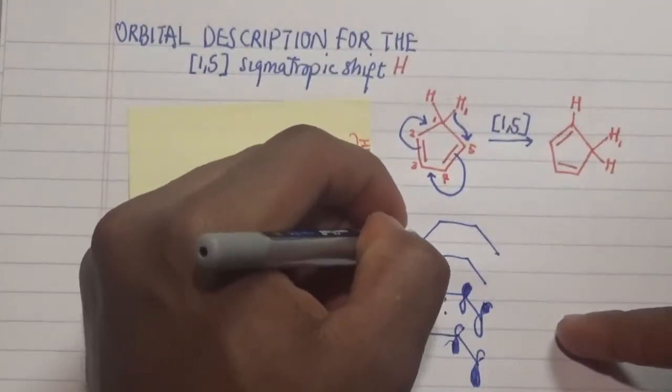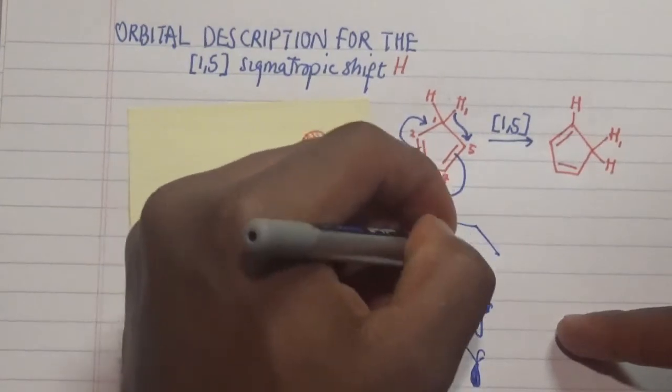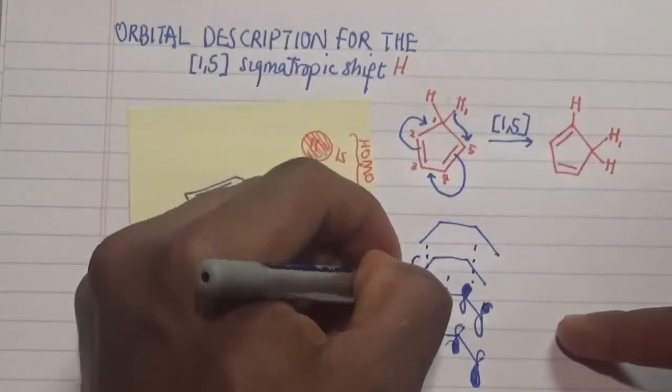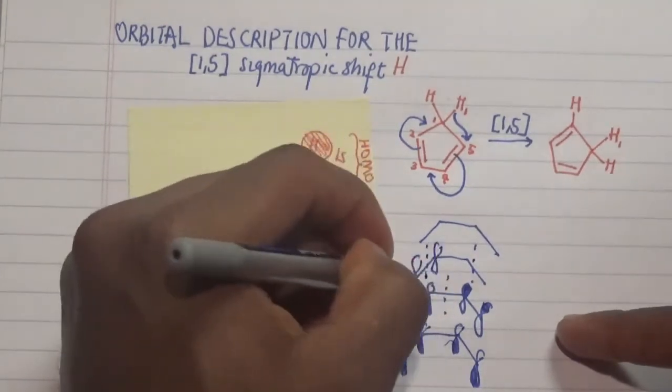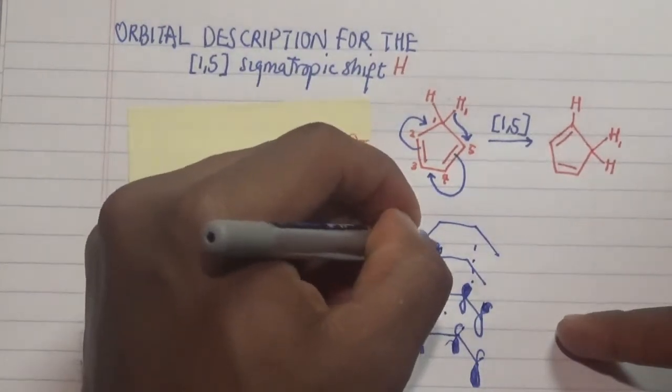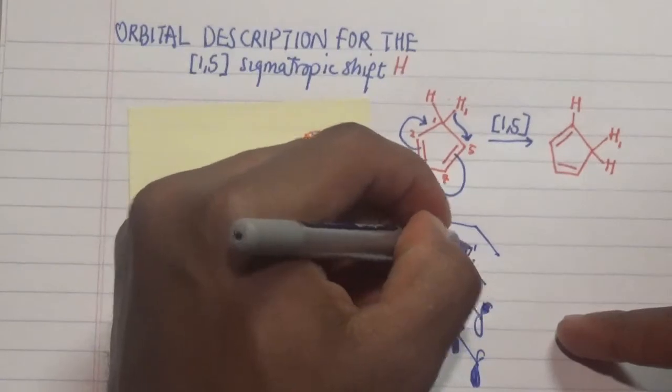Now the third one we're going to look at has two nodes being added here, where this part is out of phase with respect to that as shaded here, but this is in phase with respect to that.